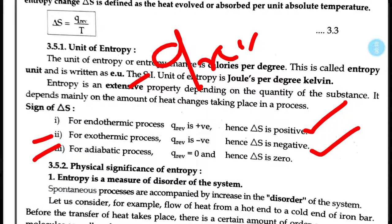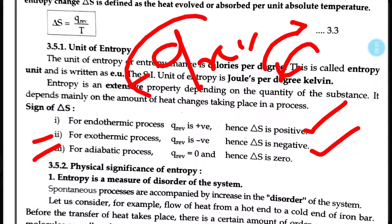In an adiabatic process, Q reversible is equal to zero — neither heat is evolved nor absorbed from outside. Therefore dQ reversible equals zero, and consequently delta S equals zero for an adiabatic process.